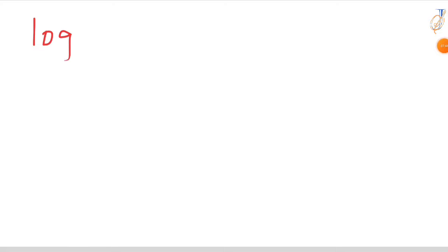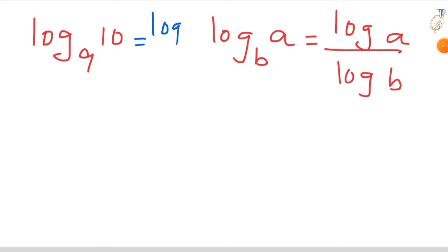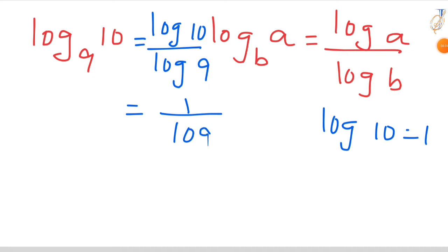Log 10 base 9. It is in the form of log A base B. We can write this log A by log B, so you have to write log 10 by log 9. And we know that log 10 value is 1. So 1 by log 9. We also know that log 9 the value is 0.954.